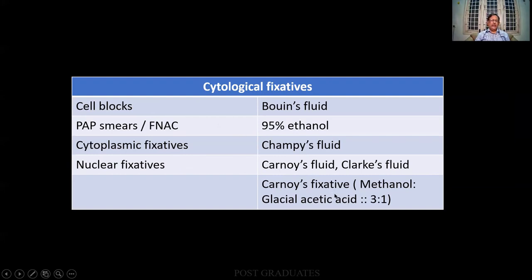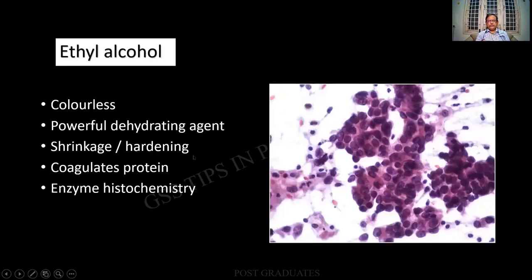These particular lists — try to know at least for the interest of it. If you want to test your friends, you can just ask what is champagne fluid. Ethyl alcohol by itself is colorless. It is a powerful dehydrating agent and it can cause shrinkage. But the main thing it causes is coagulation of the protein, and enzyme activity can be affected. Look at the fixation — there is a preservation of the cell clusters, nucleus, and the cytoplasm.